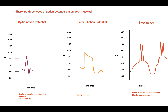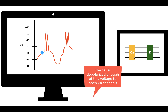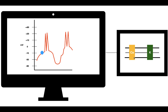Now we'll focus on the slow wave action potential — its properties, its different phases, and why the graph looks the way it does. Using a diagram, one display shows the slow wave action potential waveform while another shows the cell's state at each point. At the first step, the cell starts in a relatively depolarized state. This initial depolarization opens calcium channels, allowing calcium to flow in and increase the intracellular calcium concentration, producing the upstroke — the depolarization driven by rising calcium.